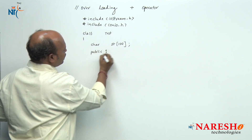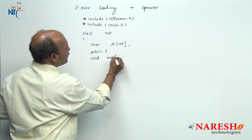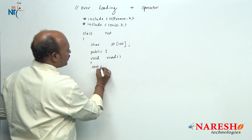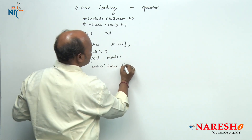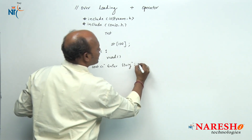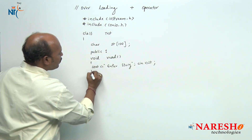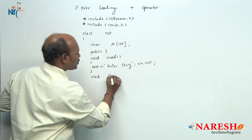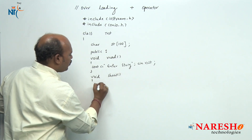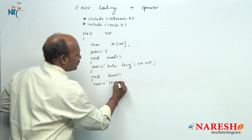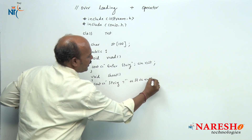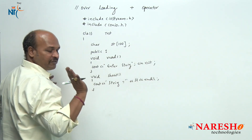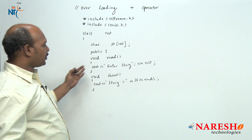In the public area, I declare `void read()`. Inside read: `cout << "Enter string:"` and `cin >> st`. This reads the string. Then `void show()` with `cout << "String = " << st << endl`. These are the general member functions to read and print the data.